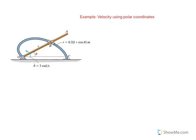We have an example here of using polar coordinate system and determining velocity at a given instant. In this case, our objective is to find velocity when theta equals 30 degrees.